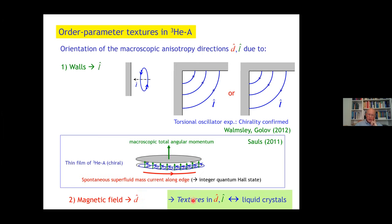That's the orientation of the orbital part of the order parameter. The magnetic field can orient the spin part. Altogether, this leads to what is called textures in the directions of the order parameter, in complete analogy to liquid crystals. This terminology was introduced by Pierre de Gennes.